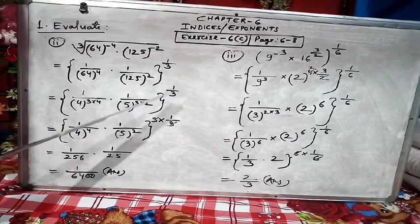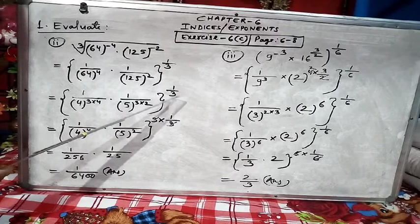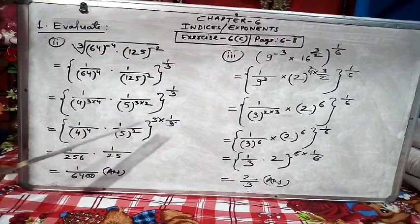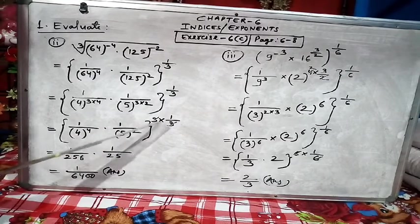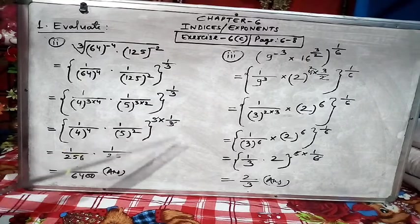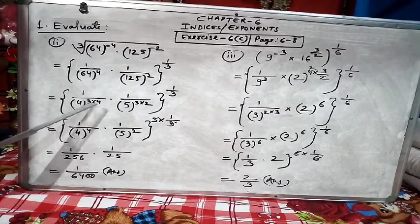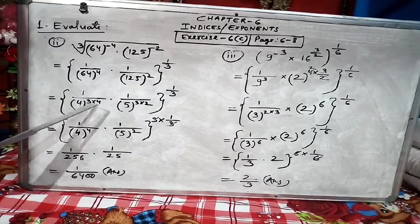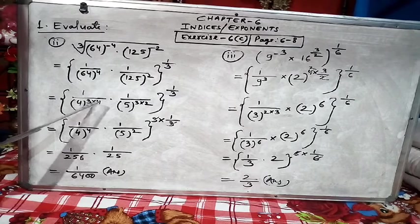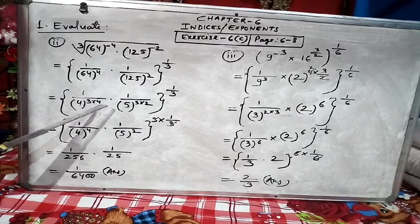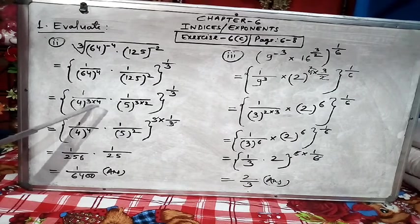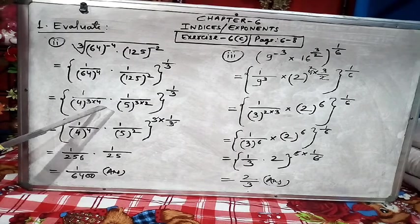Now, as you know, power is 1/3, so our target should be how to bring 3 here so that 3 and 3 get cancelled. Then I saw 64 is 4 cube - 4 × 4 × 4 is 64. So 64 I wrote as 4^3 and power 4 came here. This 3 is for 4 cube and 4 is the same here.